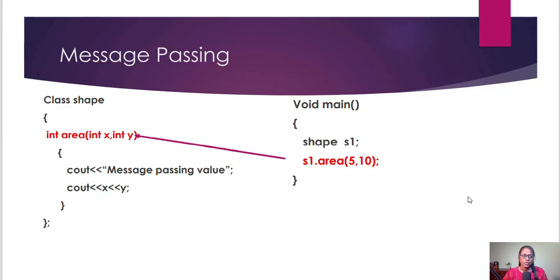The next important concept is message passing. Message passing is nothing but you are calling this object, class shape, and then inside you are creating the member function int area(int x, void). Then see what message passing value, so your int x, void.